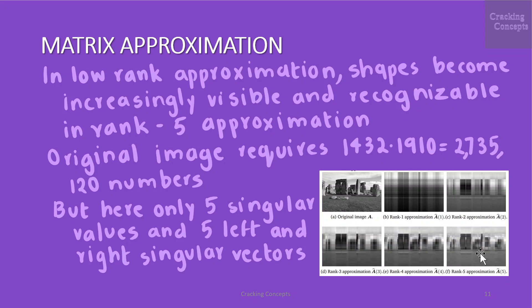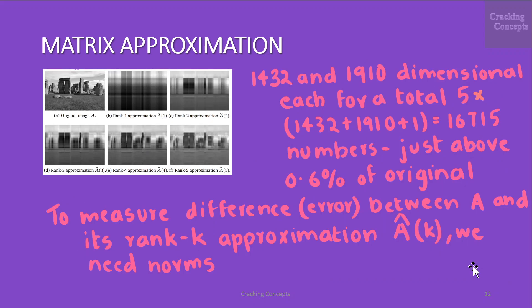Now we will see another collection of 6 images that is used for image reconstruction with SVD. We have the original image here and all the other images have been reconstructed using the low rank approximation of SVD which is the rank k approximation. We will see that the shape of the rocks become increasingly visible and clearly recognizable in the rank 5 approximation. While the original image requires 1432 x 1910 which is 2,735,120 numbers, the rank 5 approximation requires only to store the 5 singular values and the 5 left and right singular vectors which is 1432 and 1910 dimensional each for a total of 5 × (1432 + 1910 + 1) which is 16,715 numbers, just above 0.6% of the original.